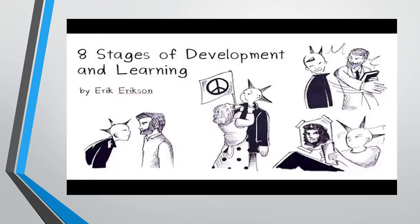Stage 3 — Initiative vs. Guilt: In preschool we take initiative, try out new things, and learn basic principles like how round things roll. We ask, 'Is it okay for me to do what I do?' If we are encouraged, we can follow our interests. If we are held back or told that what we do is silly, we can develop guilt. We are now learning from the entire family.